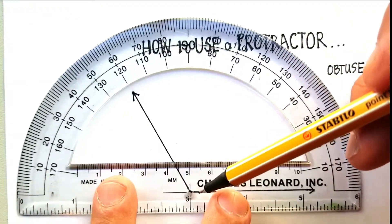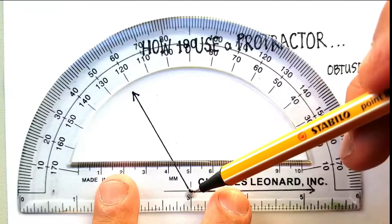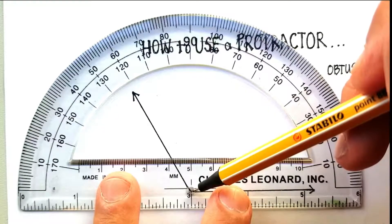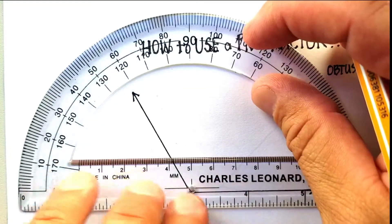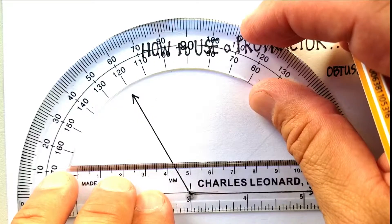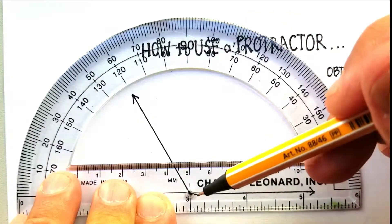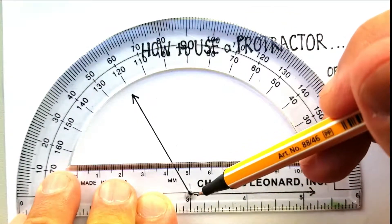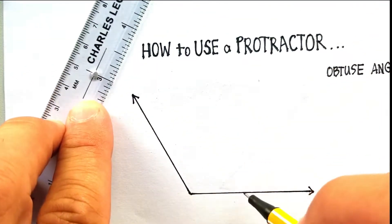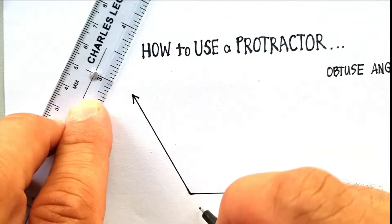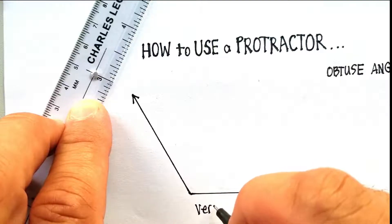At the bottom of your protractor, there's usually a circle, or a little hole. You take that little hole, and you put it right on the vertex of the angle. Remember, the vertex is where the two rays meet. So, put it right there at the vertex.